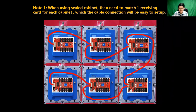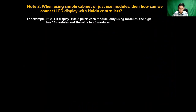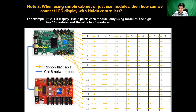You can see this connection diagram — it is an LED display with six sealed cabinets, one receiving card inside each cabinet, so a total of six receiving cards, and they connect to each other via LAN cable. Someone may ask: when using a simple cabinet (not sealed), then how to do it? For example, a P10 LED display with 16×32 pixels per module, using only modules, with 16 modules high and 8 modules wide — one hub port connects one row of modules. If more than 10 rows are needed, then we need to add one receiving card R512, and then connect the receiving cards and the main card via Cat6 cable, as shown in the connection diagram.